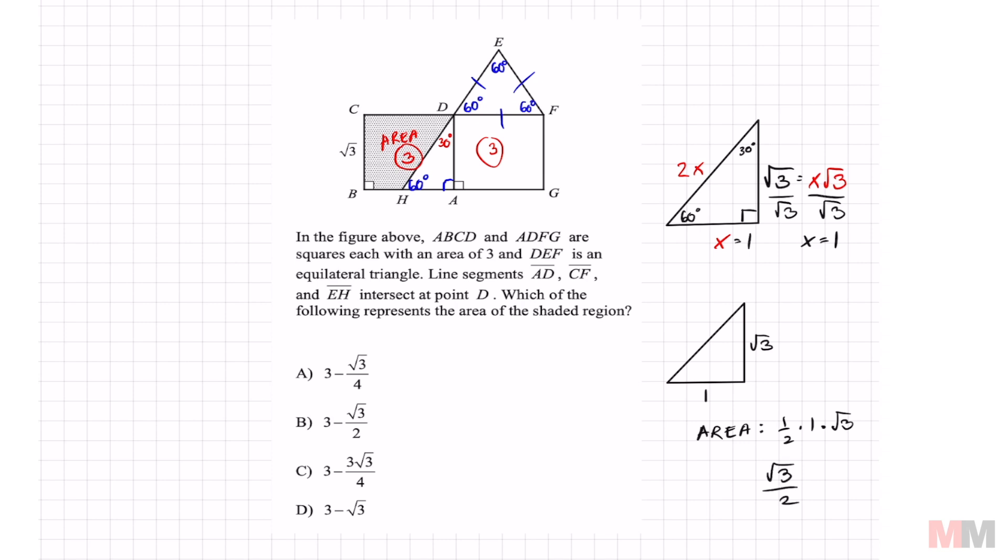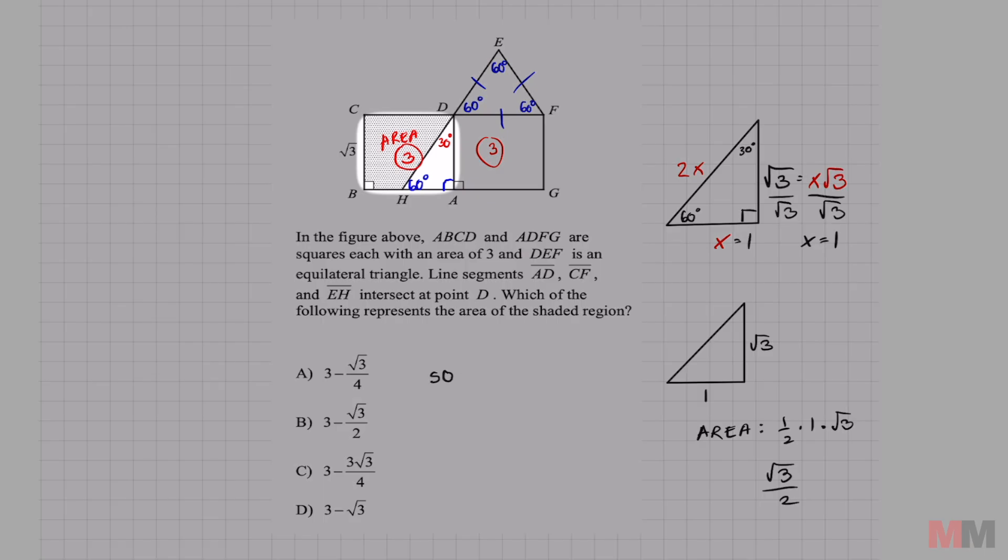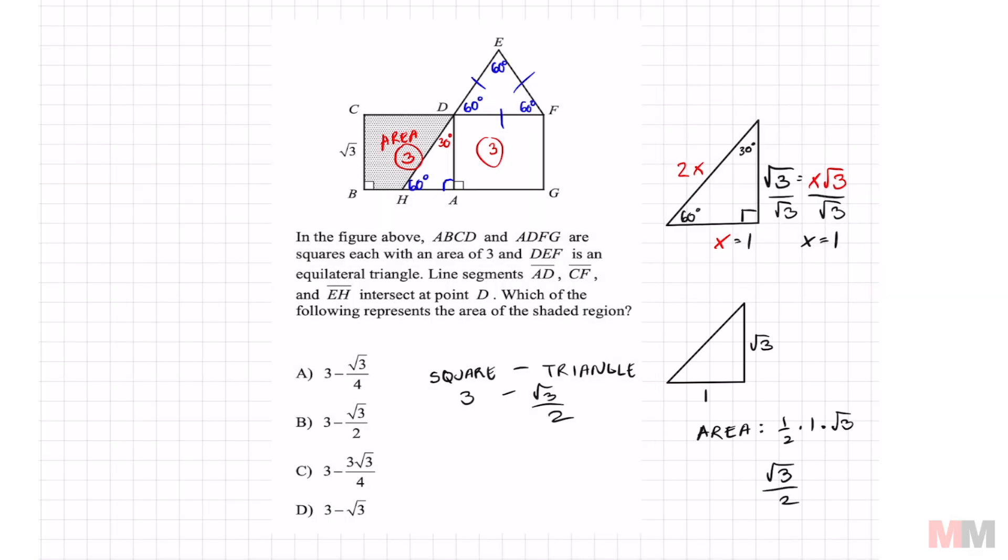And to find the area of the shaded region, we're just going to take the area of the square, which is 3, minus the area of the triangle, which is √3 over 2. And if you look at your answer choices, that would be B.